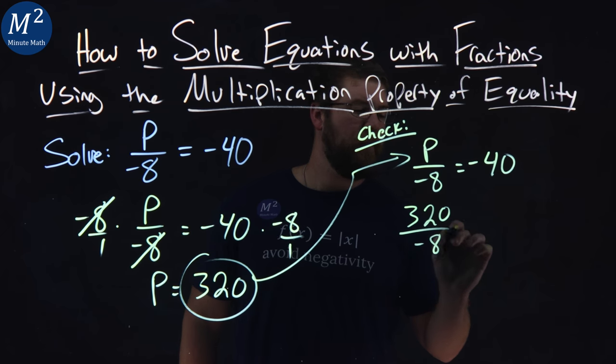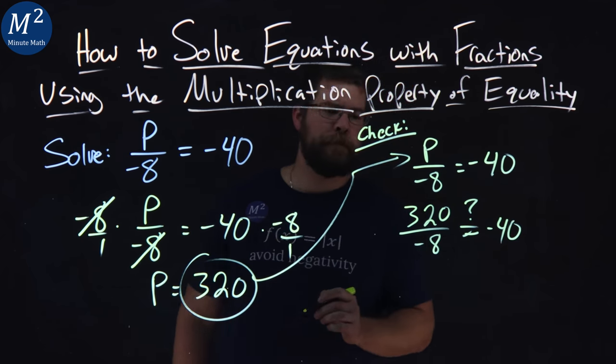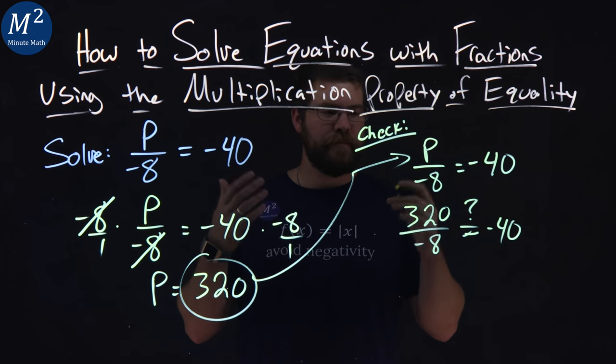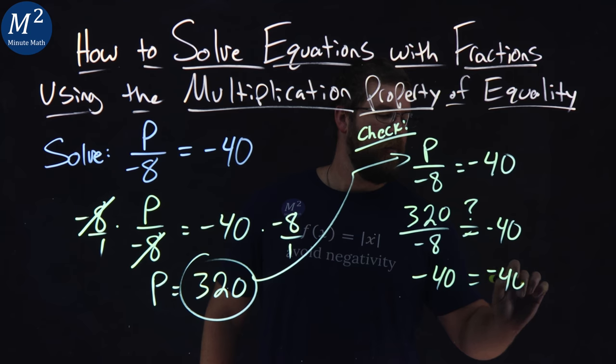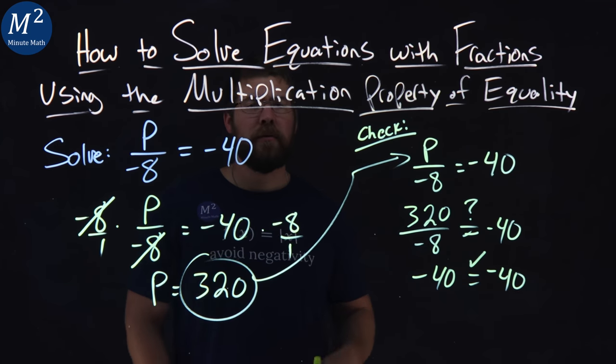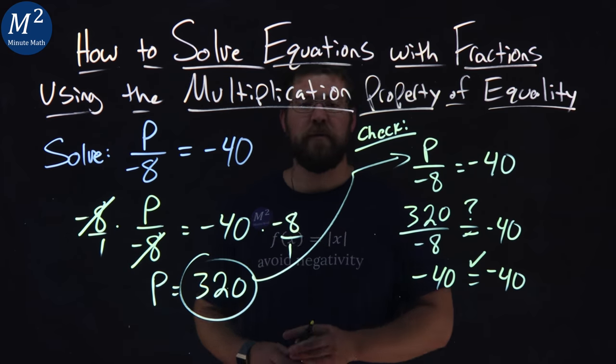320 divided by negative 8—is that equal to negative 40? Well, 320 divided by negative 8 is negative 40. And we can see the left and right-hand sides are equal, confirming that the solution to our equation is P equals 320.